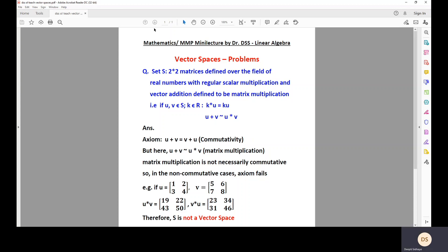That means if U and V belong to the set S and if K is a scalar which belongs to real field, then scalar multiplication is straightforward. When you multiply U with the scalar K, it gives you KU.